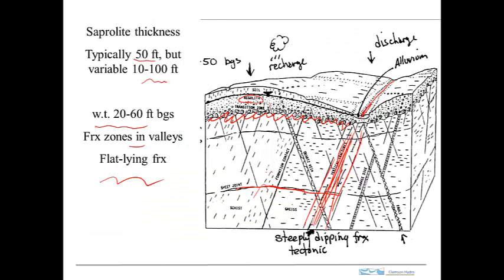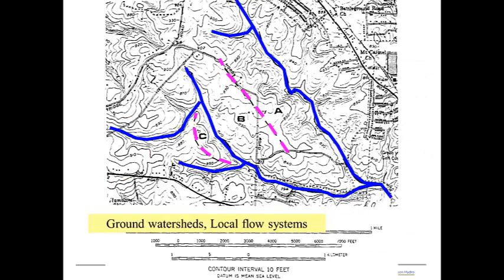One more thing: the water table is typically thought of as being up in the saprolite. What is also typical for the groundwater watersheds around here is that they form local flow systems, meaning recharge to the aquifer will typically go and discharge to the nearest stream.